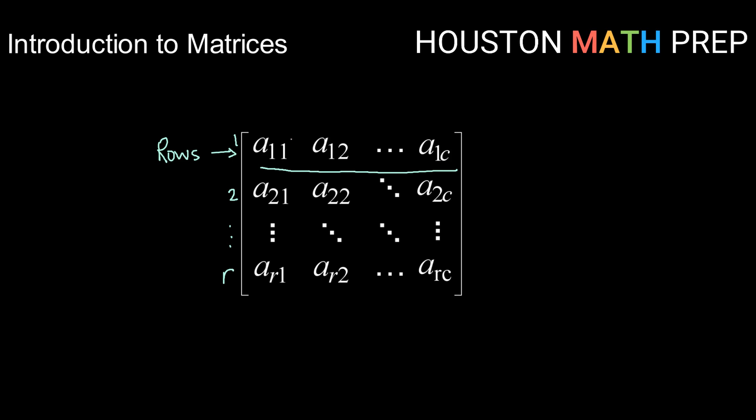Similarly, running in a vertical direction from top to bottom, we have columns. Columns start on the far left with column one and move to the right with column two and all the way over to column C.